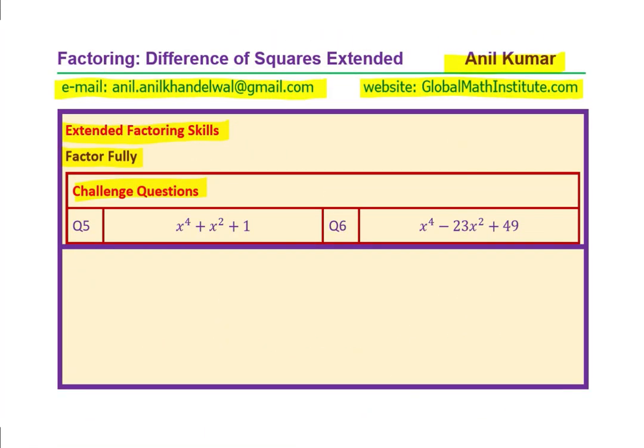Now, let us look into the solution of this particular equation, factoring x to the power of 4 plus x square plus 1, and x to the power of 4 minus 23 x square plus 49. Well, as you can see, the normal practice which is product and sum really does not work. So what can you do?